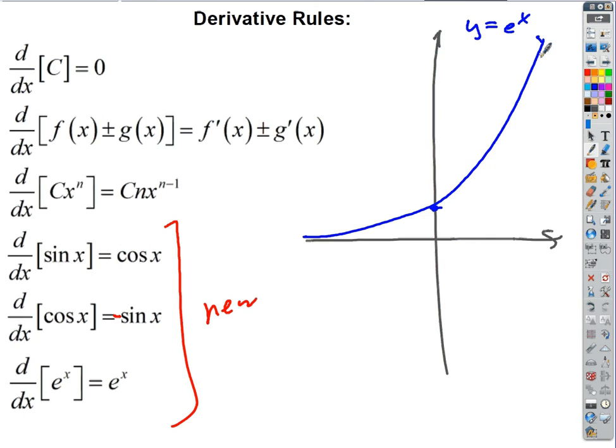What does this tell you, though? If y is equal to e to the x, and if I take the derivative of that, I get y prime equals e to the x. That's pretty crazy. Somebody articulate that.